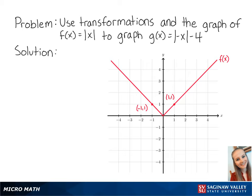For this problem, we want to use transformations and the graph of f(x) equals the absolute value of x to graph g(x) equals the absolute value of negative x minus 4.